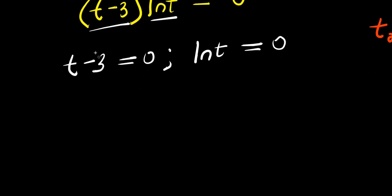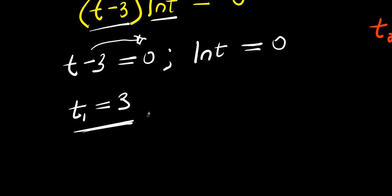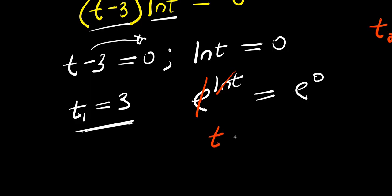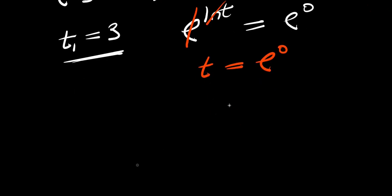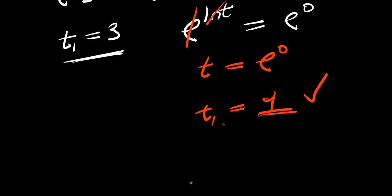To solve for t from t minus 3 equals zero, move the 3 over: t equals 3, this is t₁, the same answer as before. For natural log of t equals zero, take e of both sides: e to the power ln t equals e to the power zero, so t equals 1. So we have another solution right here.